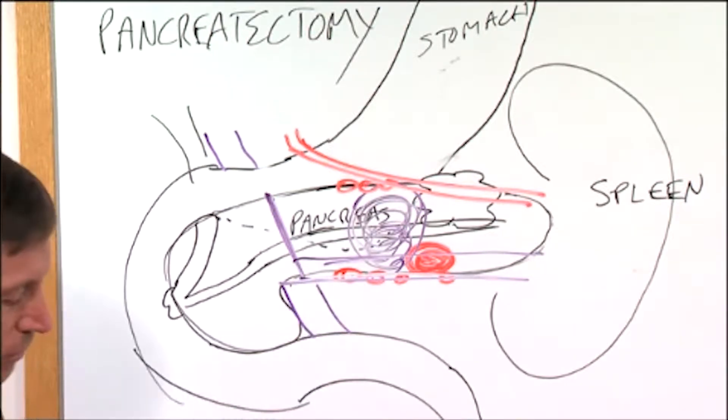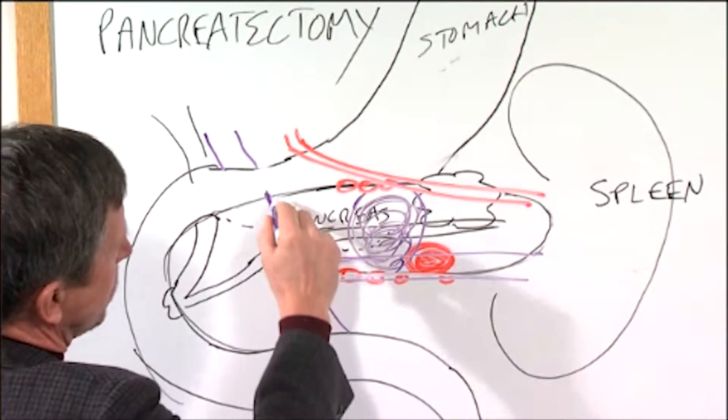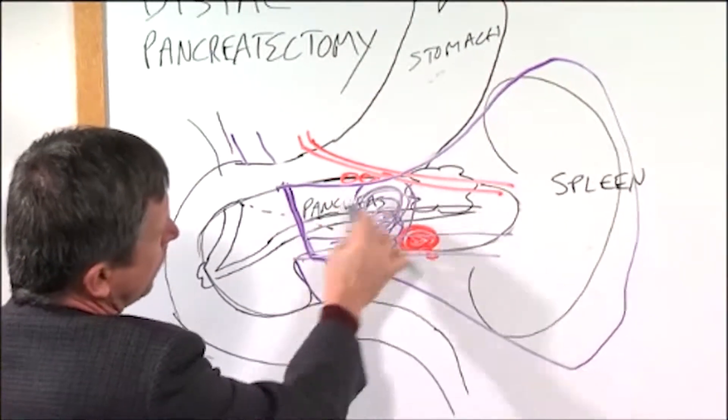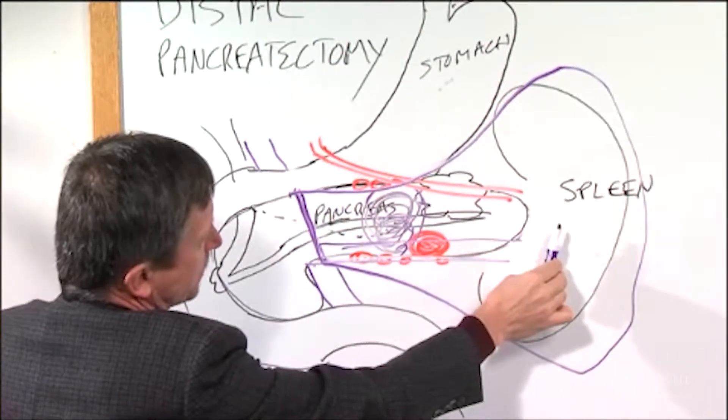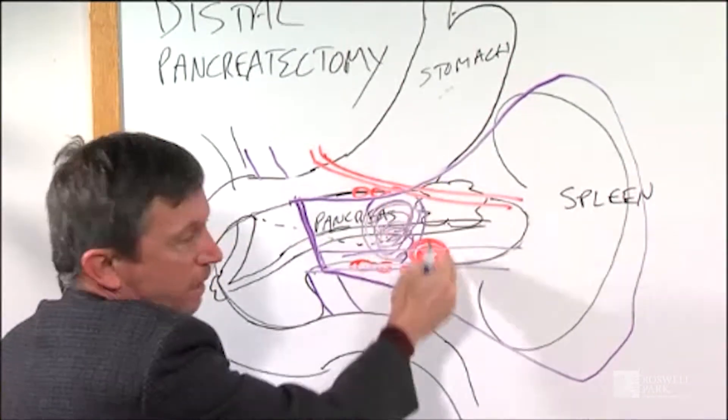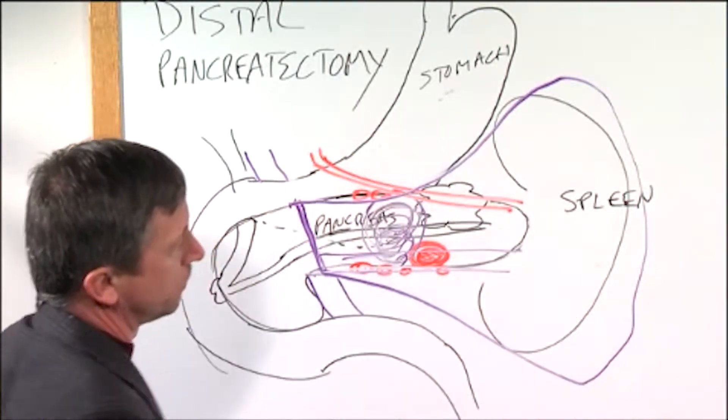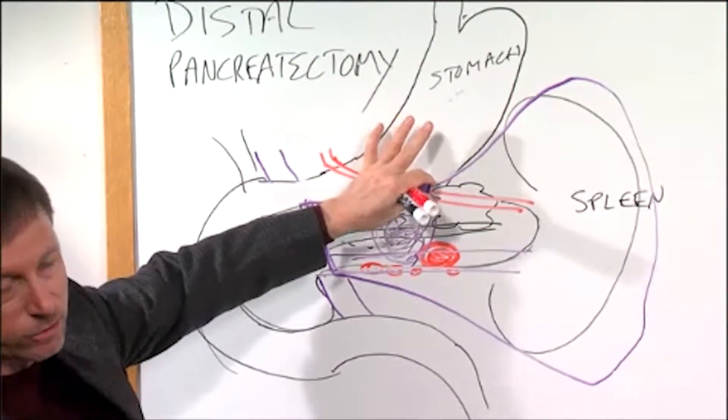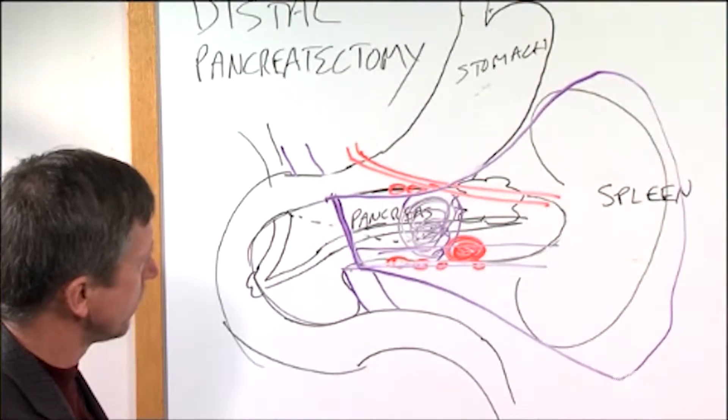So it's often that we have to remove the spleen with the tail of the pancreas. Basically, here we would be removing this area here, including the neck, body, and tail of the pancreas and the spleen. If there's a situation where there's a small tumor on the very tail, we may just be able to remove that section, but in general, this would be the distal pancreatectomy. The stomach is just moved out of the way. You don't have to actually remove any of the stomach unless, of course, it's a larger tumor that's directly involving the stomach.